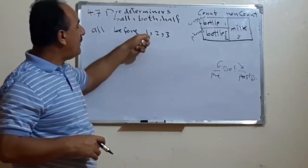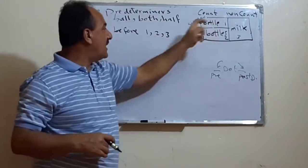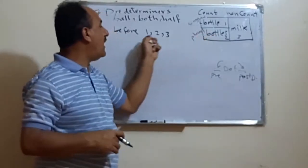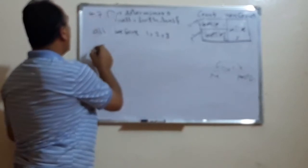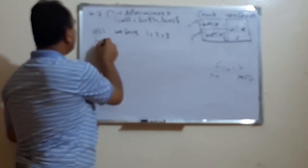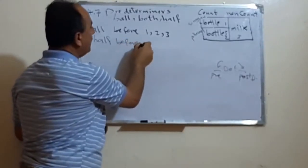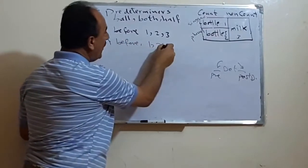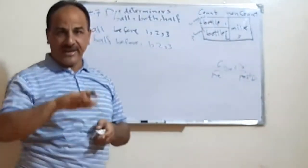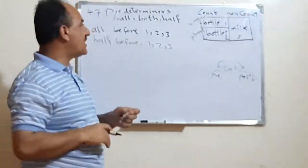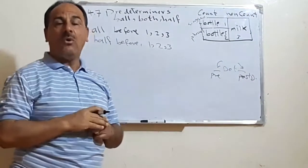So 'all' can be used before number one (the singular), before number two (the plural), and before number three (uncountable). If we come to 'half,' again, it can be used before number one, two, and three. For example: 'half the bottle was drunk,' or 'half the room was painted.'